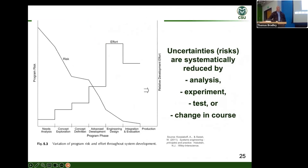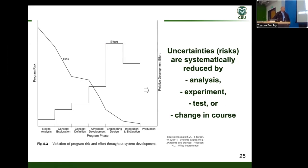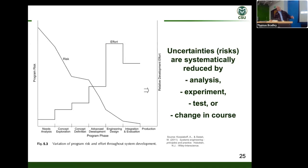We've spoken about objectives: we don't want to wait until the end, so we're trying to get risk down as early as possible in the program. The phases on the bottom use the Kossiakoff model going through needs analysis, exploration, definition, engineering development, and then post-development including production. The idea is we hit the risk hard on the early side, and don't let it compound late.